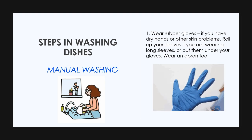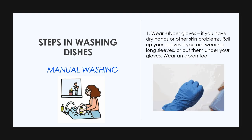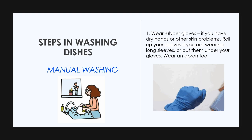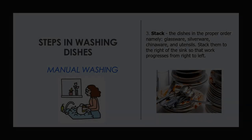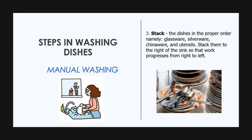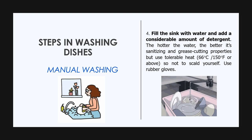There are steps to follow in manual washing. Step one: wear rubber gloves. If you have dry hands or other skin problems, roll up your sleeves or put them under your gloves and wear an apron too. Then scrape all large pieces of food and place them in a garbage bin. Stack the dishes in the proper order — glassware, silverware, chinaware, and utensils — to the right of the sink so that work progresses from right to left. Next, fill the sink with water and add a considerable amount of detergent. The hotter the water the better for sanitizing, but use tolerable heat around 66°C or 150°F or above, so as not to scald yourself. Use rubber gloves.